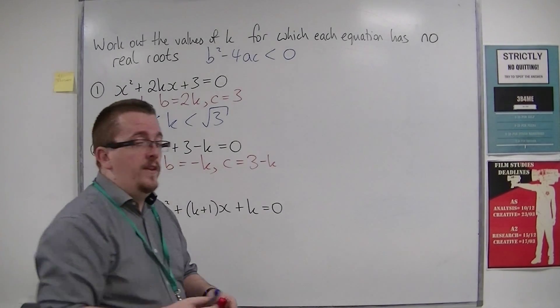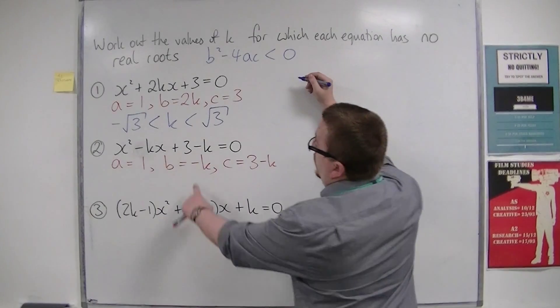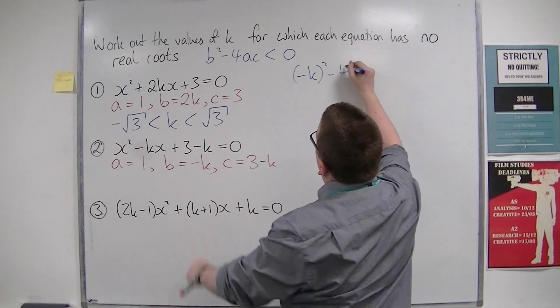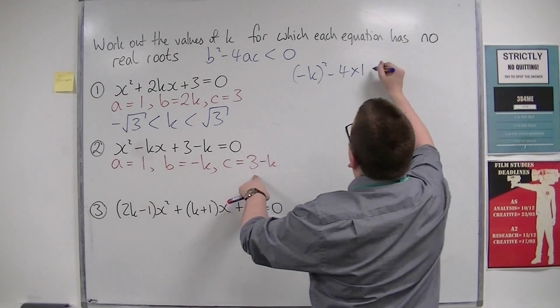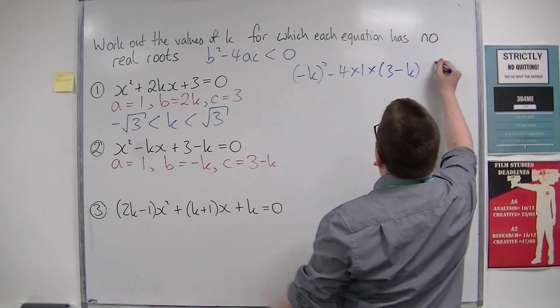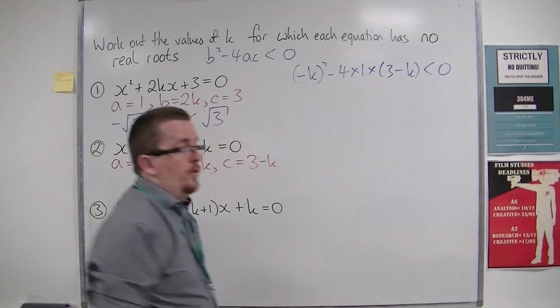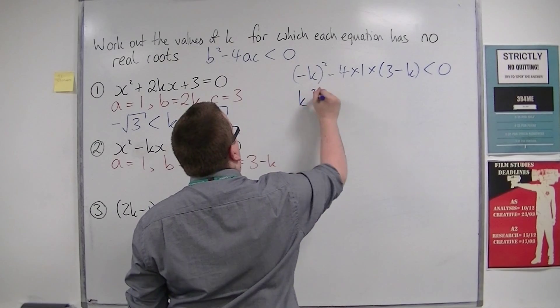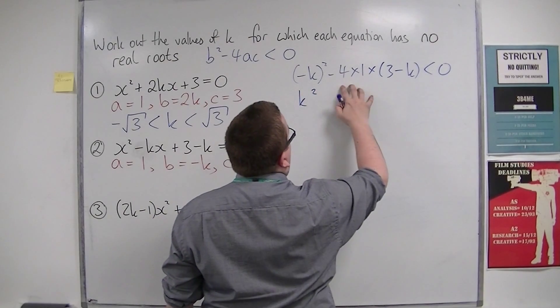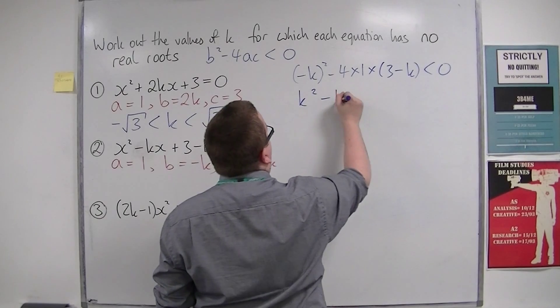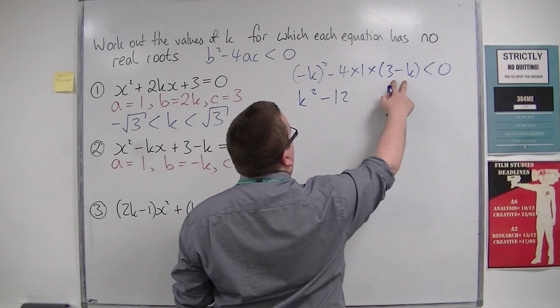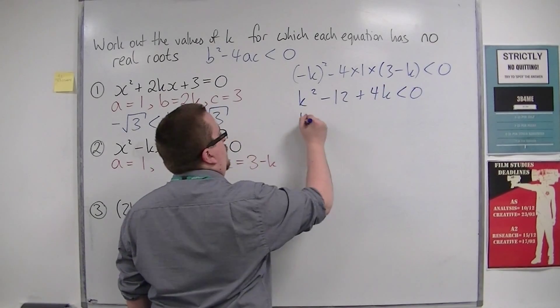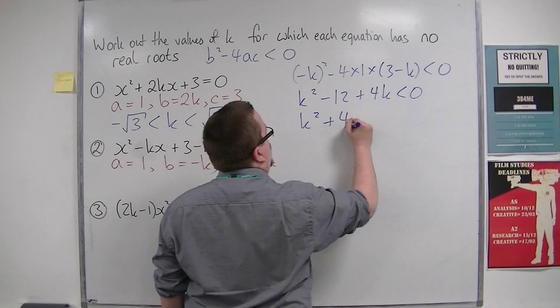Substitute those values into the inequality. b², so (-k)² in a bracket. Take away 4 lots of 1 times (3 - k), and that's got to be less than 0. Let's tidy this up: k², then take away 12, and a -4 times -k makes +4k. Putting this into the usual order: k² + 4k - 12 < 0.